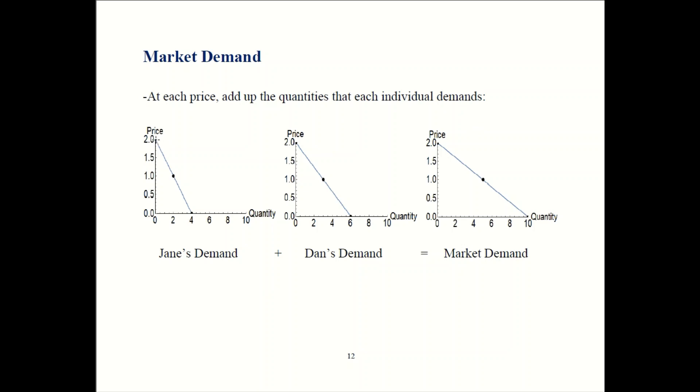You just add point by point. So price is two, Jane buys zero, Dan buys zero. So market demand is zero. When price is one, Jane bought two and Dan bought three. So we sum those distances together. You get five, which is the market demand.